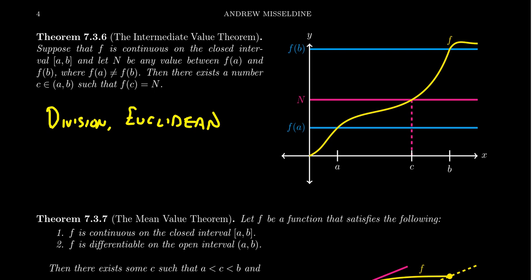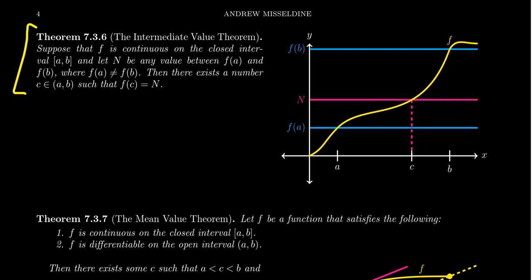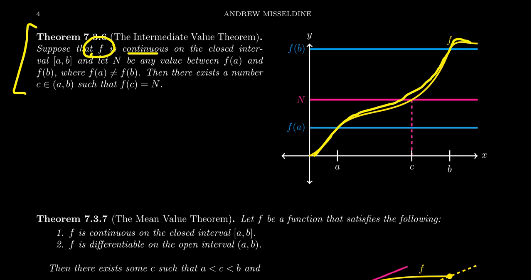A general strategy to prove uniqueness: first prove existence, then by way of contradiction suppose there is a second one, and derive a contradiction. If you get a contradiction assuming at least two exist, then you have at most one, giving uniqueness. To demonstrate this technique, I want to use a calculus example involving two theorems you probably saw: the Intermediate Value Theorem and the Mean Value Theorem.